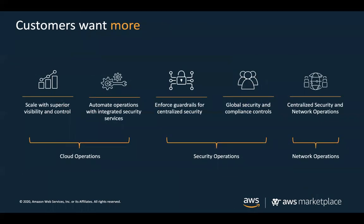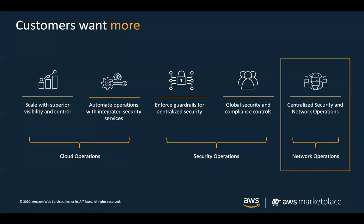AWS Control Tower gives you a starting point and prescriptive guidance on setting up your multi-account environment, but customers want more — they want scale and visibility, automated operations, additional guardrails, and centralized security and networking. There are three areas of focus: cloud, security, and network operations. To assist customers, AWS created Solutions for AWS Control Tower in AWS Marketplace, where you can find solutions directly integrated into Control Tower that can be enabled with a few clicks — a key example being Aviatrix.